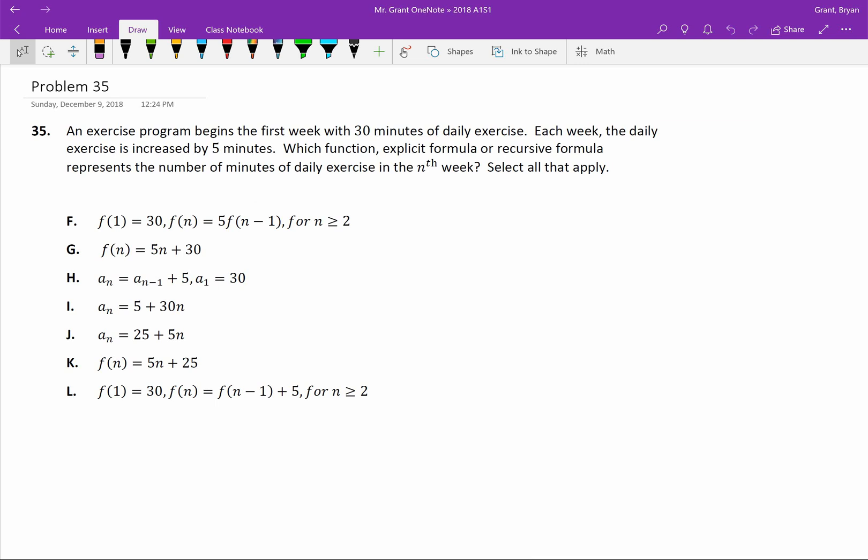First thing we're going to do is look at the problem and ignore the answers. The exercise program begins in the first week, so in week 1, we have 30 minutes of exercise. Each week, the daily exercise is increased by 5 minutes, so in week 2 we're now up to 35 minutes. In week 3, we are up to 40 minutes, and so on.